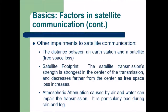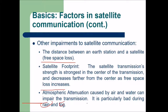There are other impairments to satellite communication. Free space loss occurs because the distance between an earth station and a satellite is unguided transmission going through the atmosphere, causing various losses. Satellite footprint: transmission strength is strongest at the center and decreases farther from the center. Atmospheric deterioration caused by air and water can impair transmission — this is particularly bad amid rain and fog.